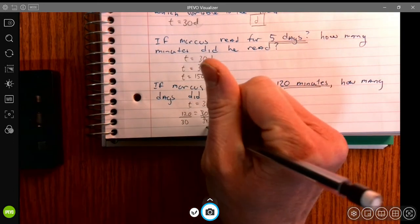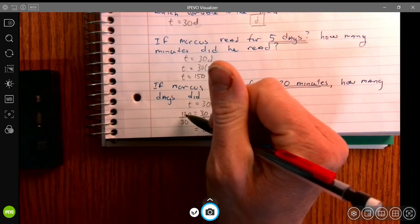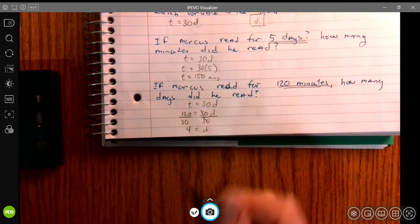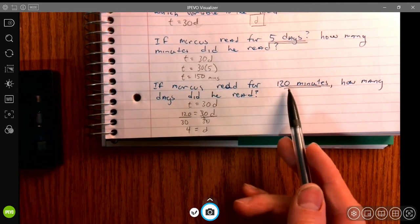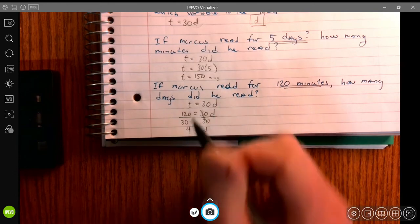d is being multiplied by 30, so I'm going to perform the inverse operation, which is division. 30 divided by 30 is just 1, which leaves me with just a d. And 120 divided by 30, that's 4. So to read for 120 minutes, Marcus would have to read for 4 days.